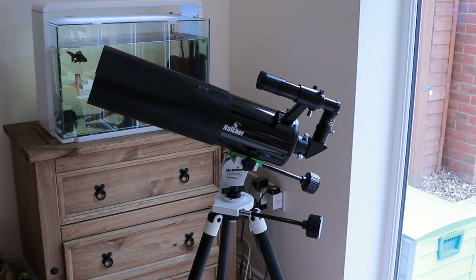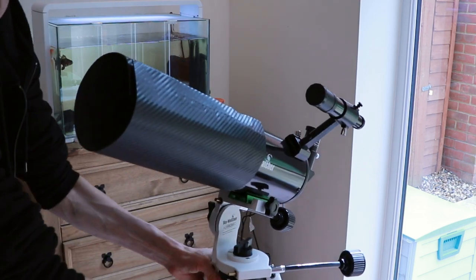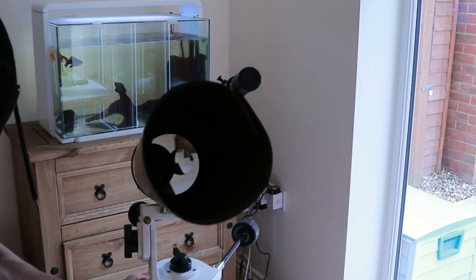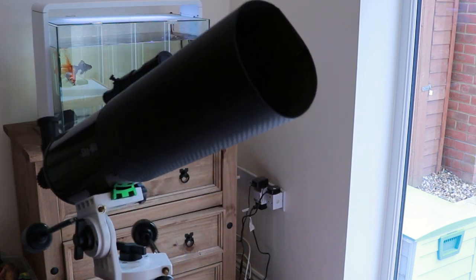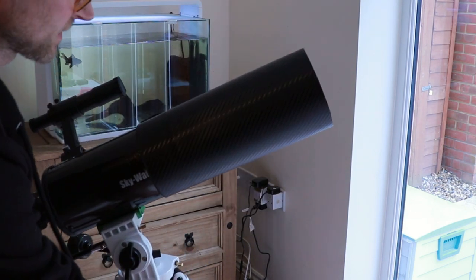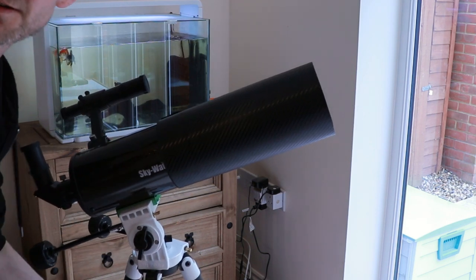That is the dew shield, and that's not looking bad at all. Bring that a bit closer to the camera - you can see that we're not blocking any light entering the telescope. Place it around this way, and that's ready to go.